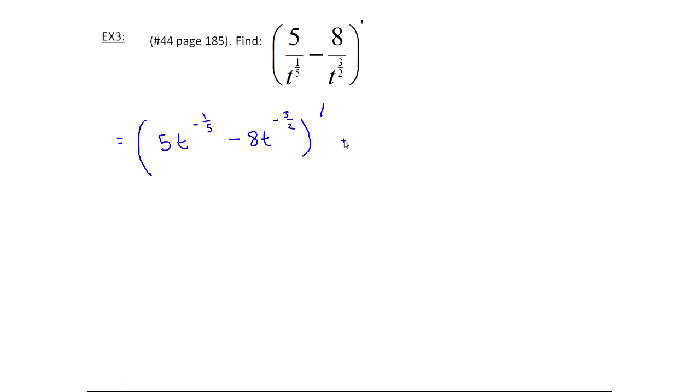All right, now I'm going to take the derivative. The 5 is a constant and it's multiplying, so it stays, and I'm going to take the derivative of t to the minus one-fifth. So I bring down the minus one-fifth, keep the t, and then it's minus one-fifth minus one, which is the same as minus five over five. I'll handle that in a minute. Okay, now I've got minus eight, so I keep that, and now I'm taking the derivative of t to the minus three-halves, so I bring down the minus three-halves, keep the t, and then take minus three-halves minus one, which is the same as minus two over two.